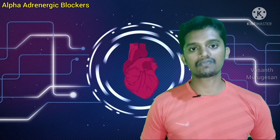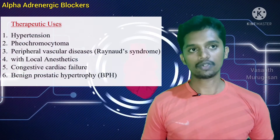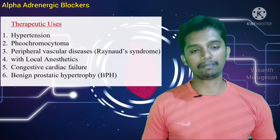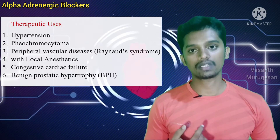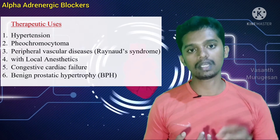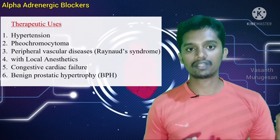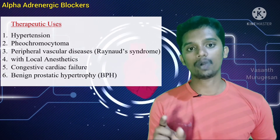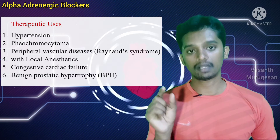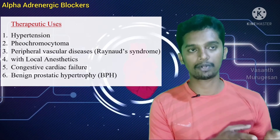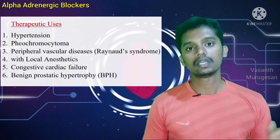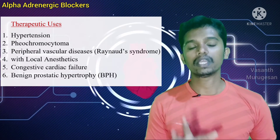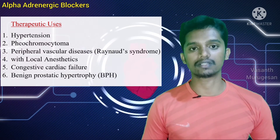Therapeutic uses of alpha adrenergic blockers: The first major use is hypertension. Selective Alpha 1 blockers — Prazosin, Terazosin, Doxazosin — treat hypertension. They lower blood pressure via vasodilation without producing tachycardia and increased cardiac output, making them useful in the treatment of hypertension.